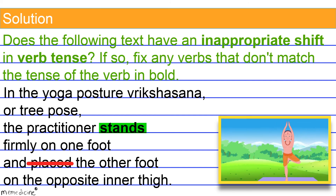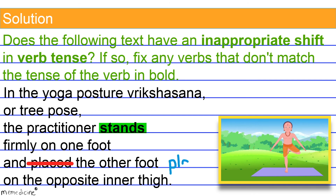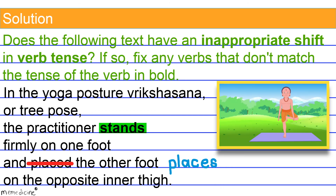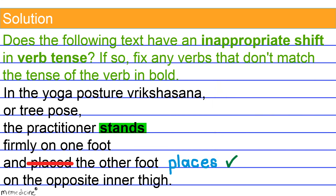Change 'placed' to its simple, singular, third person, present tense verb form to restore consistency. Here you have it — we've changed 'placed' to 'places,' its simple, singular, third person, present tense verb form. We have restored consistency, and this verb form is now correct.